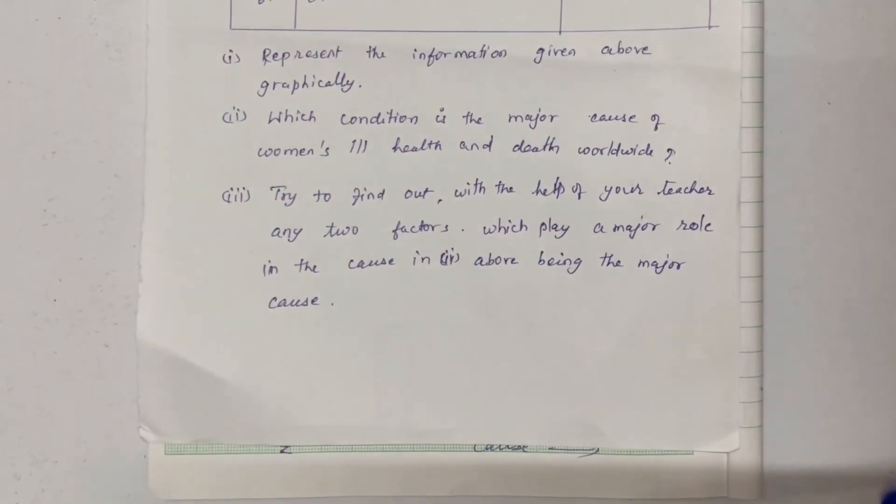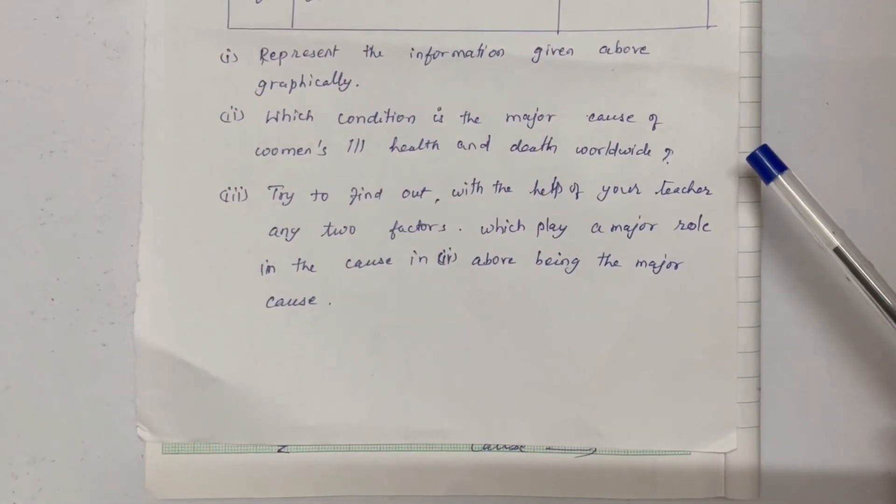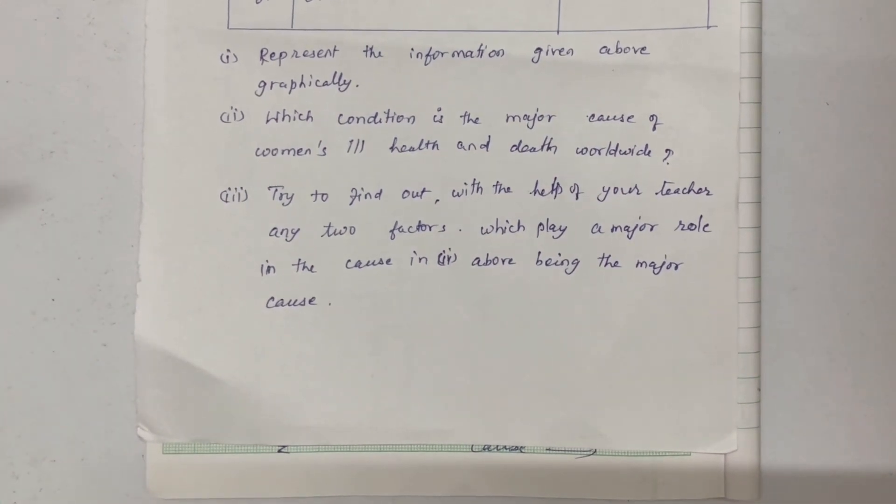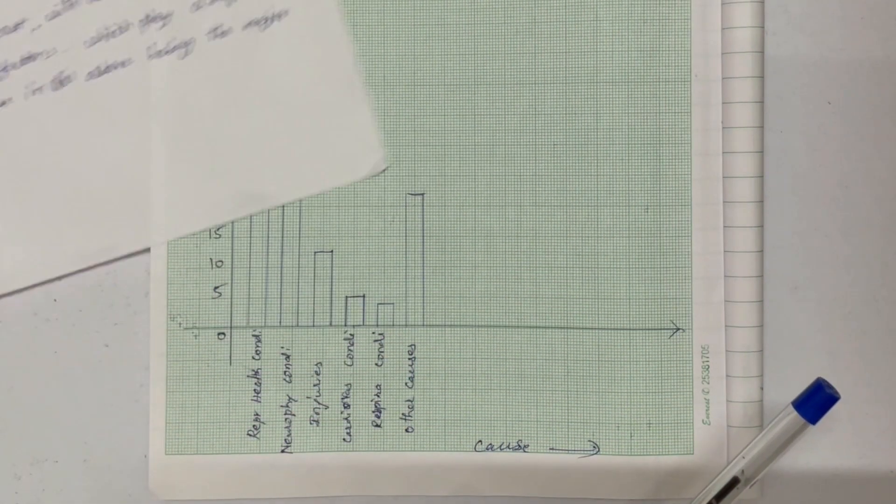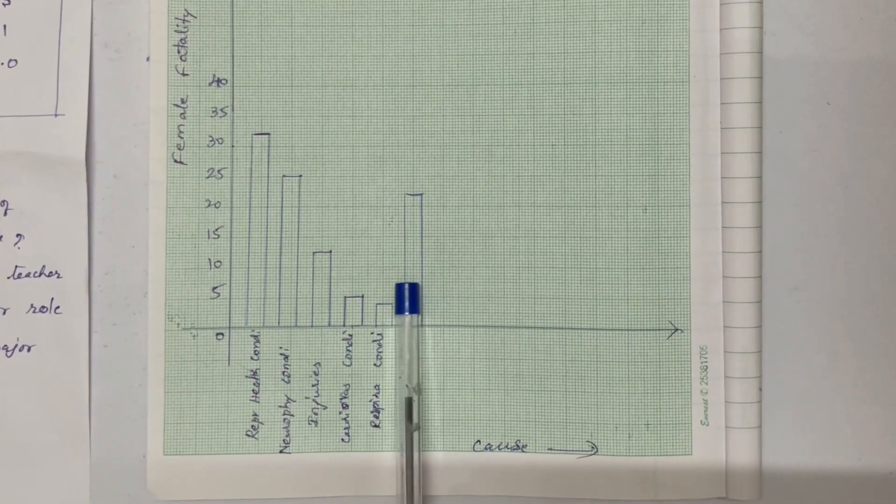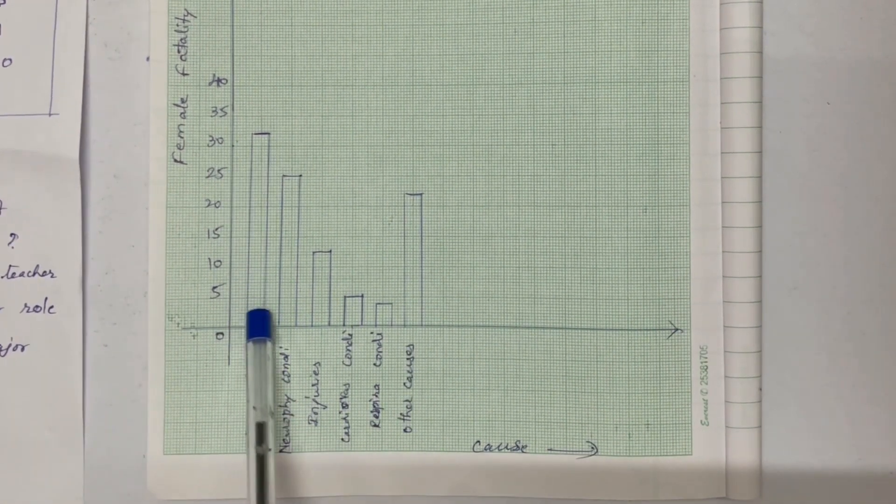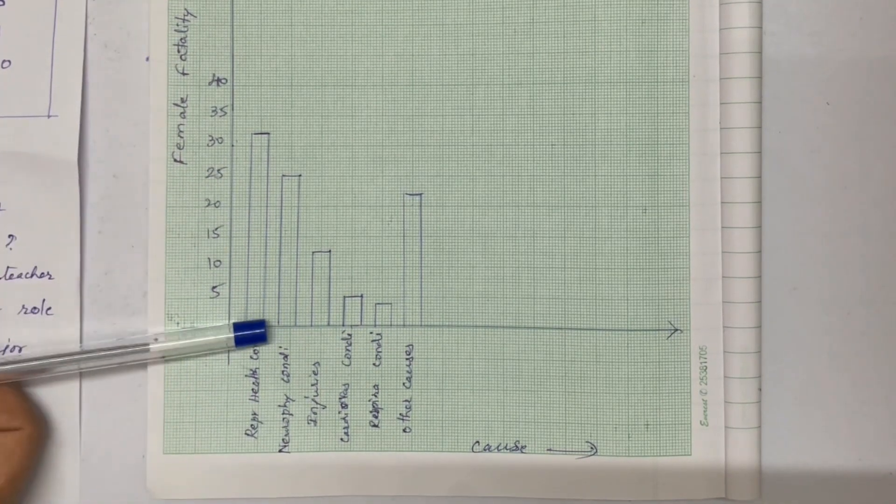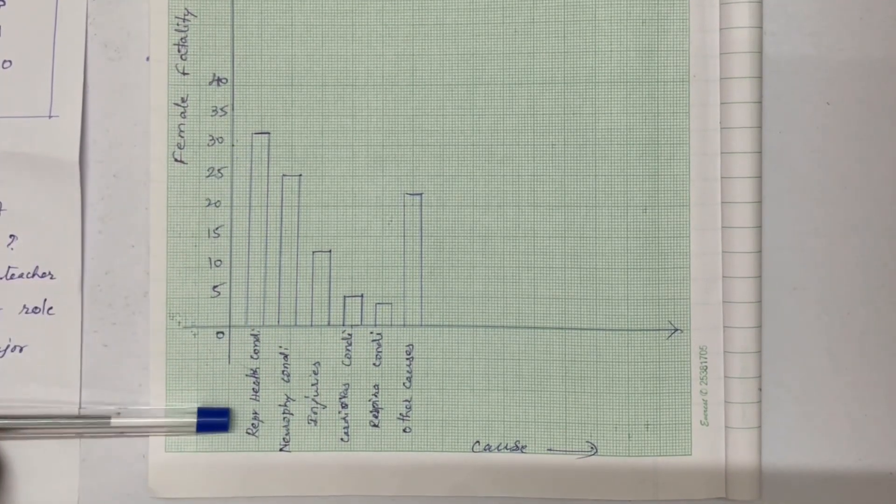Which condition is the major cause of women's ill health and death worldwide? If you look at the bar graph, which is the tallest bar, that has the highest fatality rate. That is the reproductive health condition.